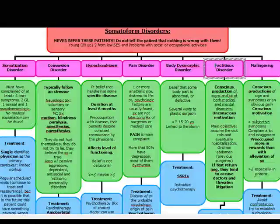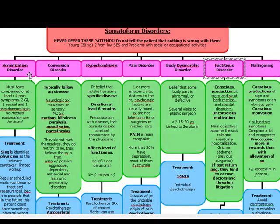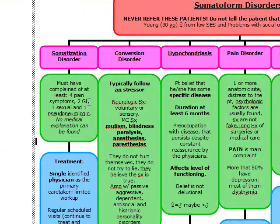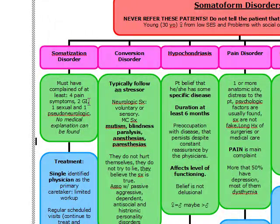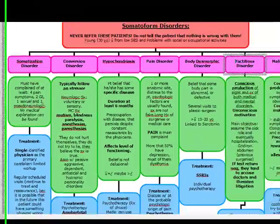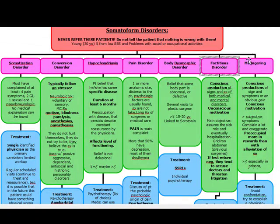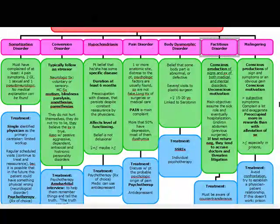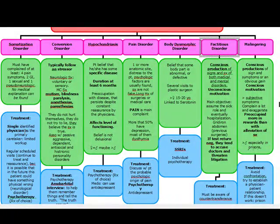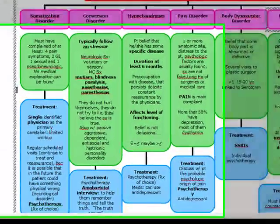Starting with somatization disorder — the most important thing to know is the diagnostic criteria. The patient must have complained of at least four pain symptoms, two GI symptoms, one sexual symptom, and one pseudo-neurological symptom, all with no medical explanation. The most important thing to do is have a single identified physician as the primary caretaker.